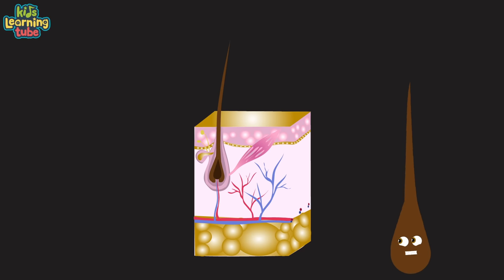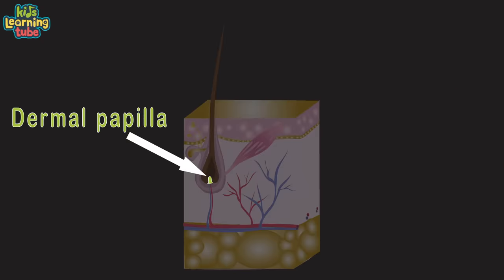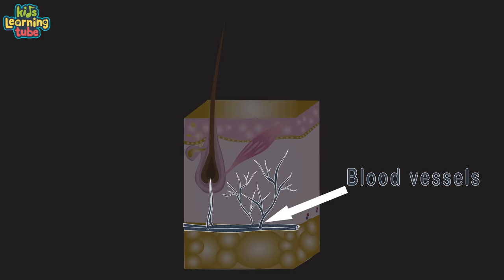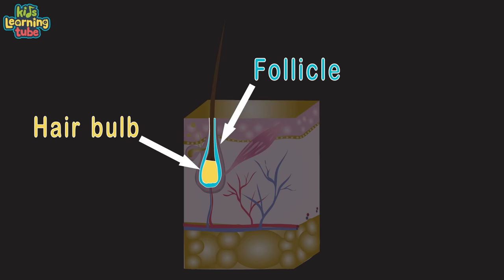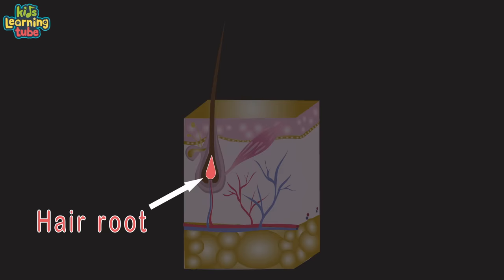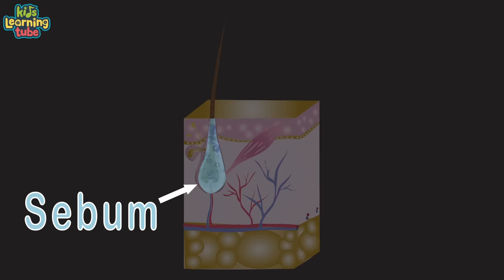Here are parts of the hair follicle that help your hair grow. Pay attention — these are important parts that you should know. This is the dermal papilla attached to the blood vessels. The hair bulb in the follicle and the hair root as shown. The sebaceous gland secretes lubricating oil, known as sebum, into the hair follicles to lubricate skin and hair.